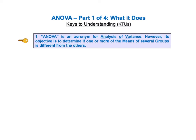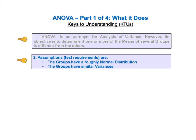However, its objective is to determine if one or more of the means of several groups is different from the others. The second KTU covers the assumptions, or test requirements: the groups must have a roughly normal distribution, and the groups must have similar variances.